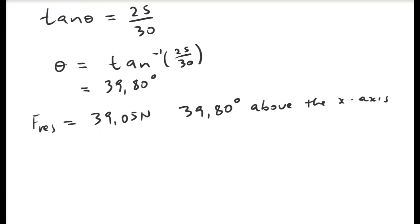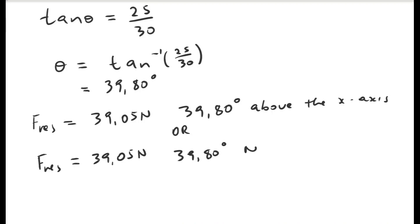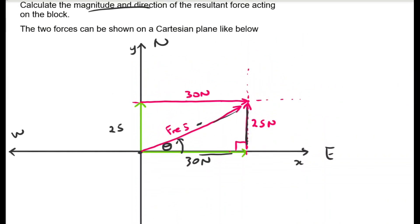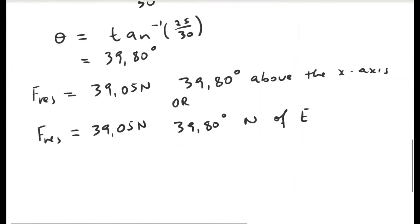Another way to quote the direction: F-res equals 39.05 newtons at 39.80 degrees north of east. If we define east as the positive x-axis and north as the positive y-axis, then this vector F-res is 39.80 degrees north of east — this is just another way of stating the direction of a vector.